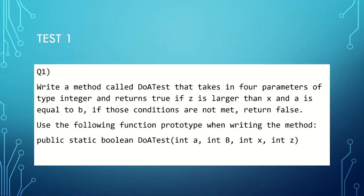For question one, we are to write a method called doATest that takes in four parameters of the type integer and returns true if z is larger than x and a is equal to b. If those conditions are not met, return false. Use the following function prototype when writing the method: public static boolean doATest int a, int b, x and z. Have a go at that and after you pause it and finish, I'll be here to help.